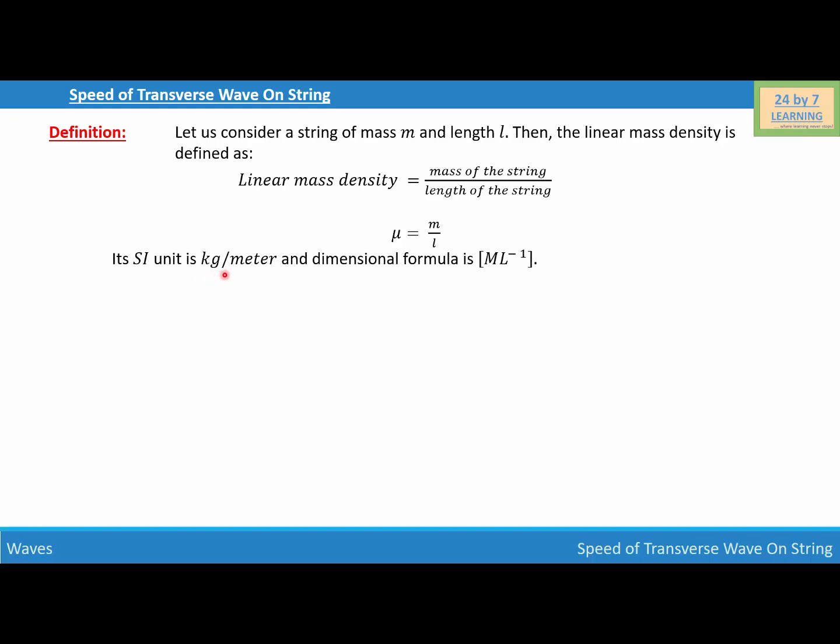The SI unit of linear mass density is kg per meter and its dimensional formula is ML to the power negative 1.